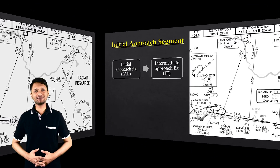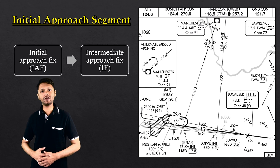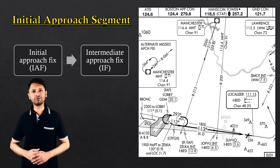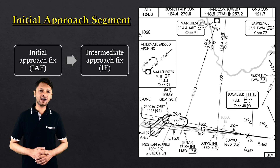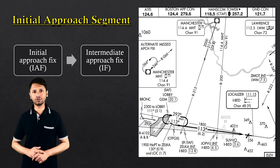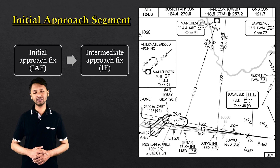Once the descent checklist is complete, the aircraft is prepared for the initial approach segment. This segment is defined by the portion of the approach between the initial approach fix and the intermediate approach fix.